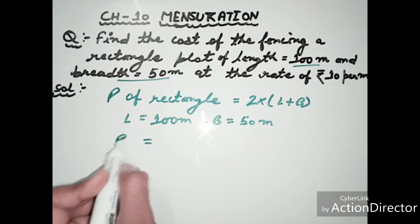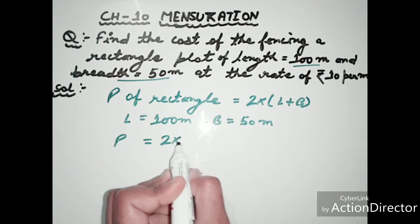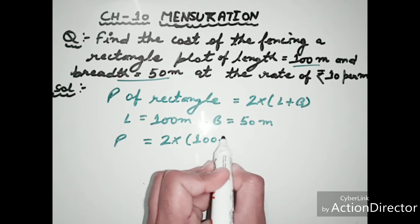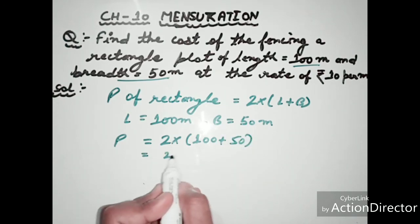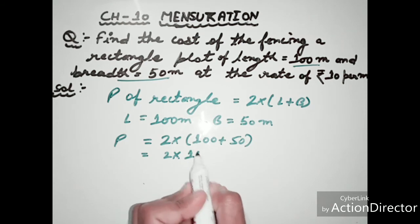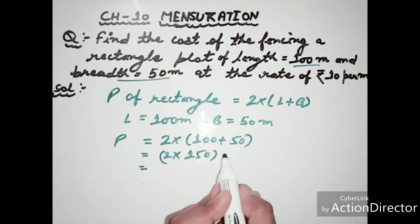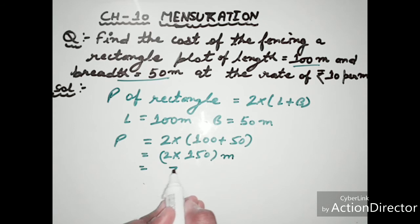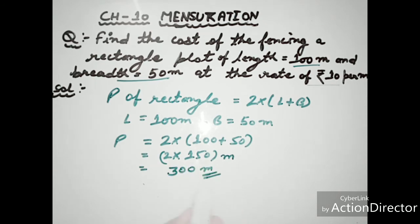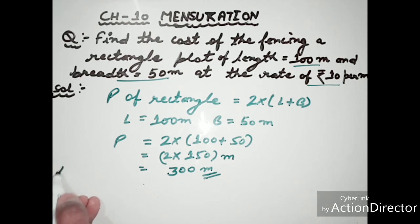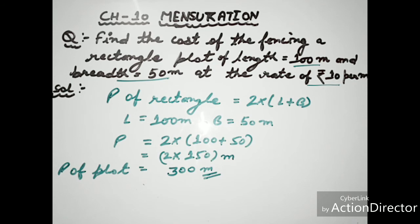We put in the values: 2 into (100 + 50) equals 2 into 150, which equals 300 meters. So the perimeter of the plot is 300 meters.